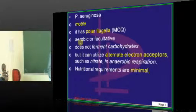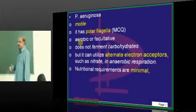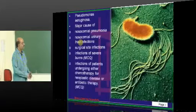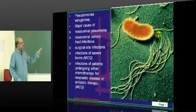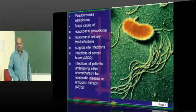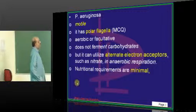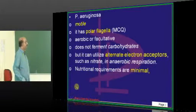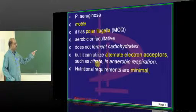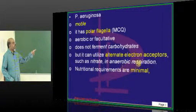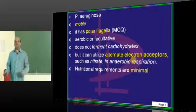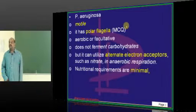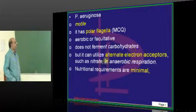How do you describe Pseudomonas? It is motile with polar flagella — polar flagella is a very important finding. It will not ferment any carbohydrates. It can undergo anaerobic respiration because, other than oxygen, it is capable of using nitrite as the ultimate electron acceptor. So it can live anaerobically.